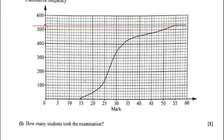We're going up in 20s: 520, 540, 560, 580, 600. So halfway between there is 530. Therefore, 530 students took the exam.